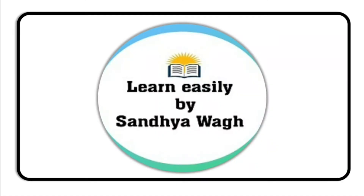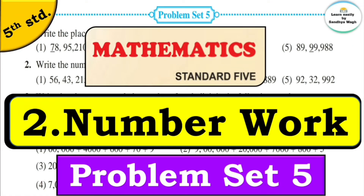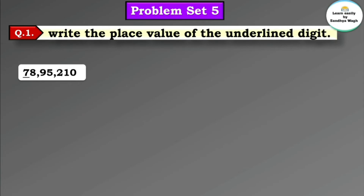Hello dear students, today we are going to solve Problem Set 5 of fifth standard mathematics. Question 1: write the place value of the underlined digit. You have studied how to find the place value of an underlined digit in fourth standard. Now let's revise those things and solve this question. Our first number is 78,95,210 and the underlined digit is 7.